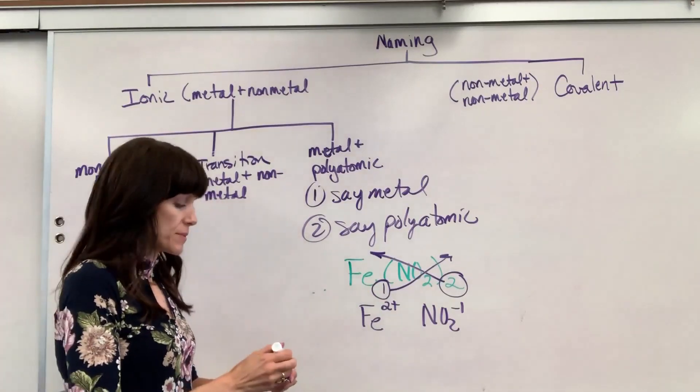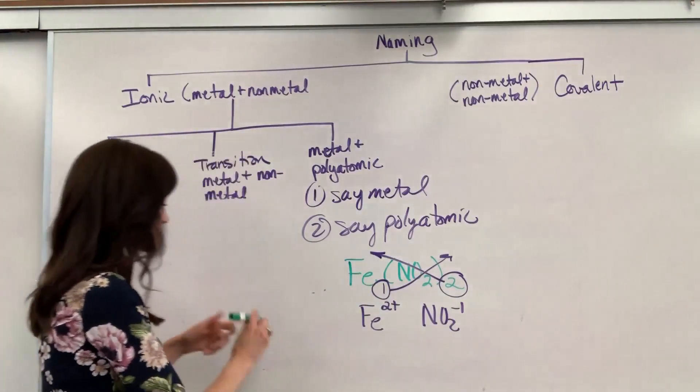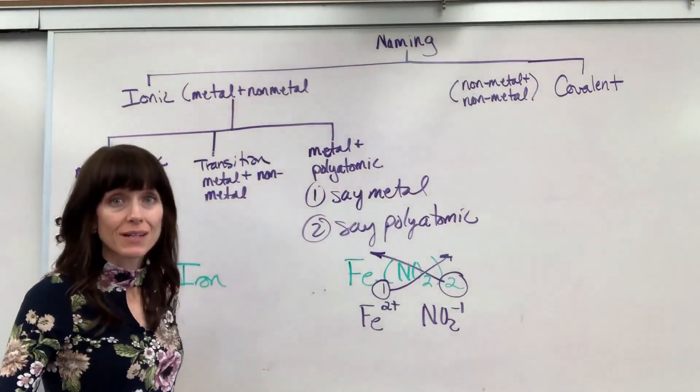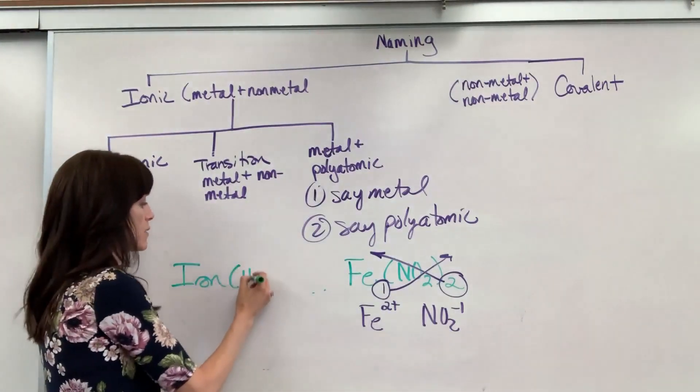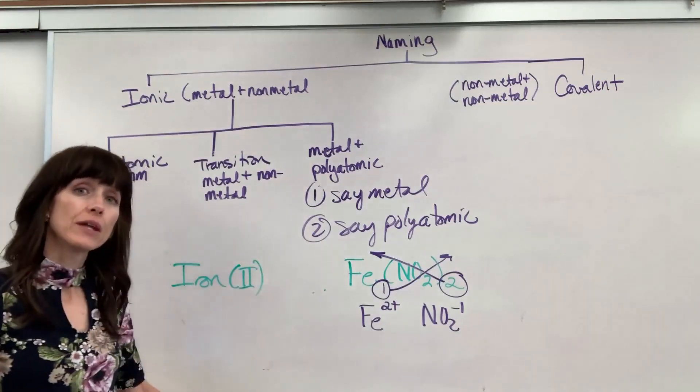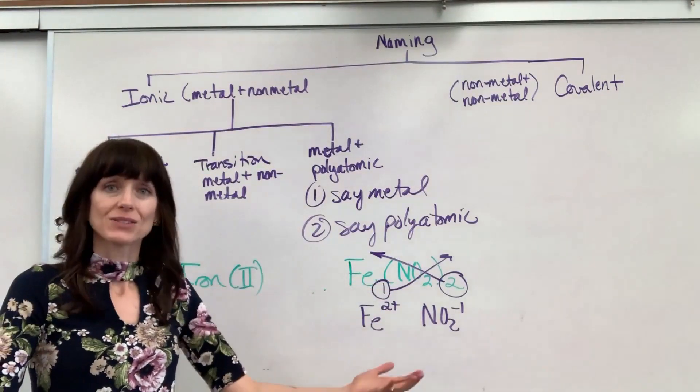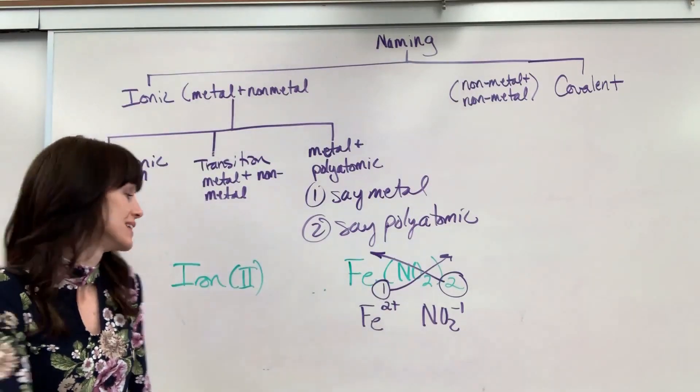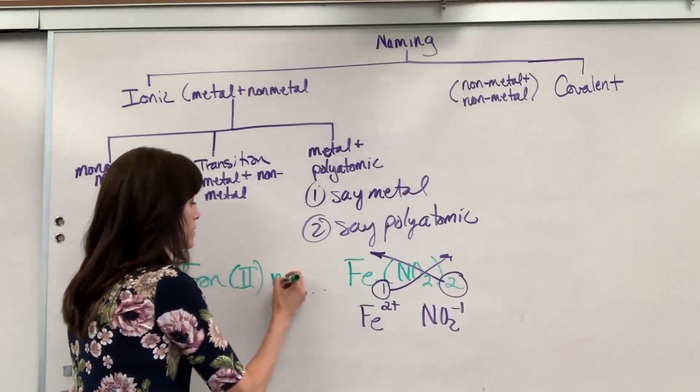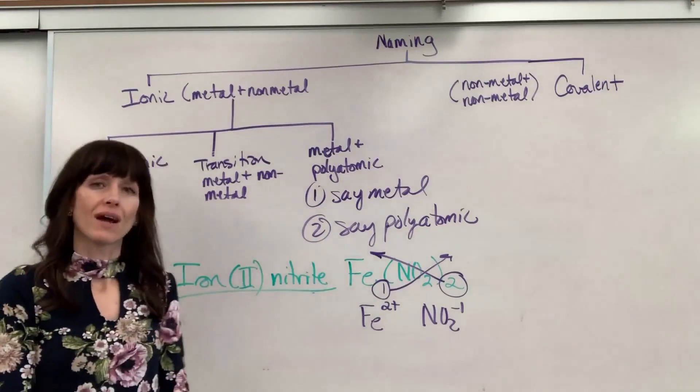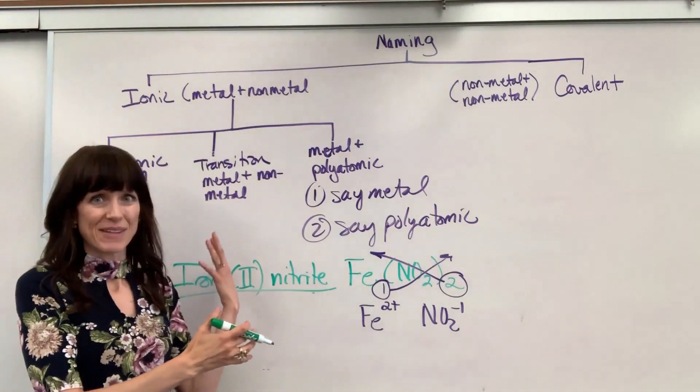So let's go through the steps. Say the metal's name: iron. I have to tell the reader what the original charge was - it was a 2, so I put that in Roman numerals. Lastly, I state the polyatomic, which is nitrite. Iron II nitrite. And there we have it - that is ionic naming.